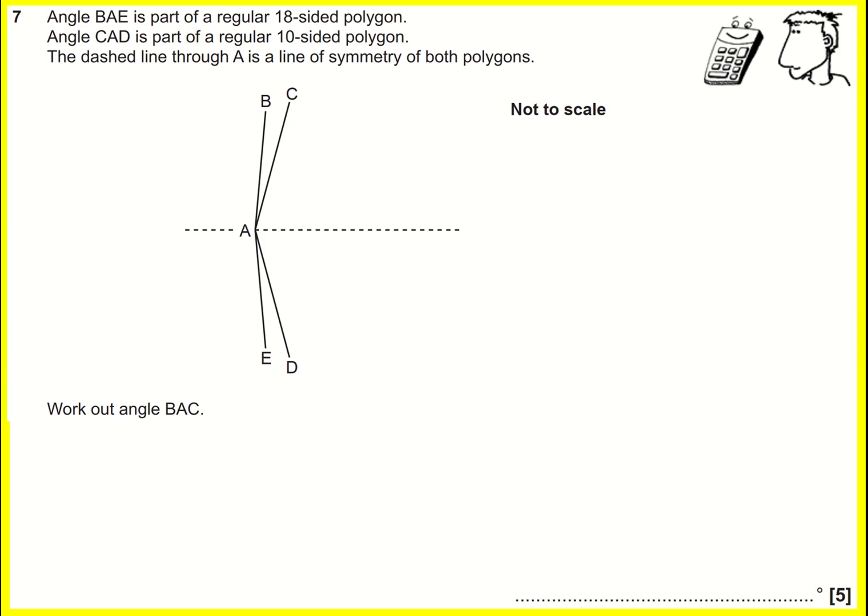Okay, we've got to find angle BAC, so we go from B to A to C, and it's going to be this angle here. Alright, let's have a go at this. So for our 18-sided polygon, there's a couple of ways that we can find the angle. The 18-sided polygon is going to be larger, so it actually tells us BAE.